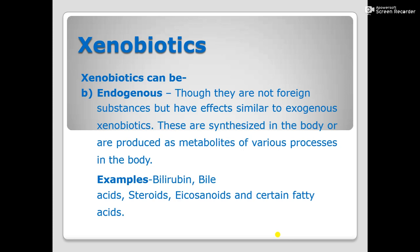Classical examples include bilirubin, bile acids, steroids, and certain fatty acids — all these metabolites come under the category of endogenous xenobiotics, produced by your body systems. Bilirubin is synthesized in the body; as we know, the liver secretes bile, which is responsible for the digestion of fats.